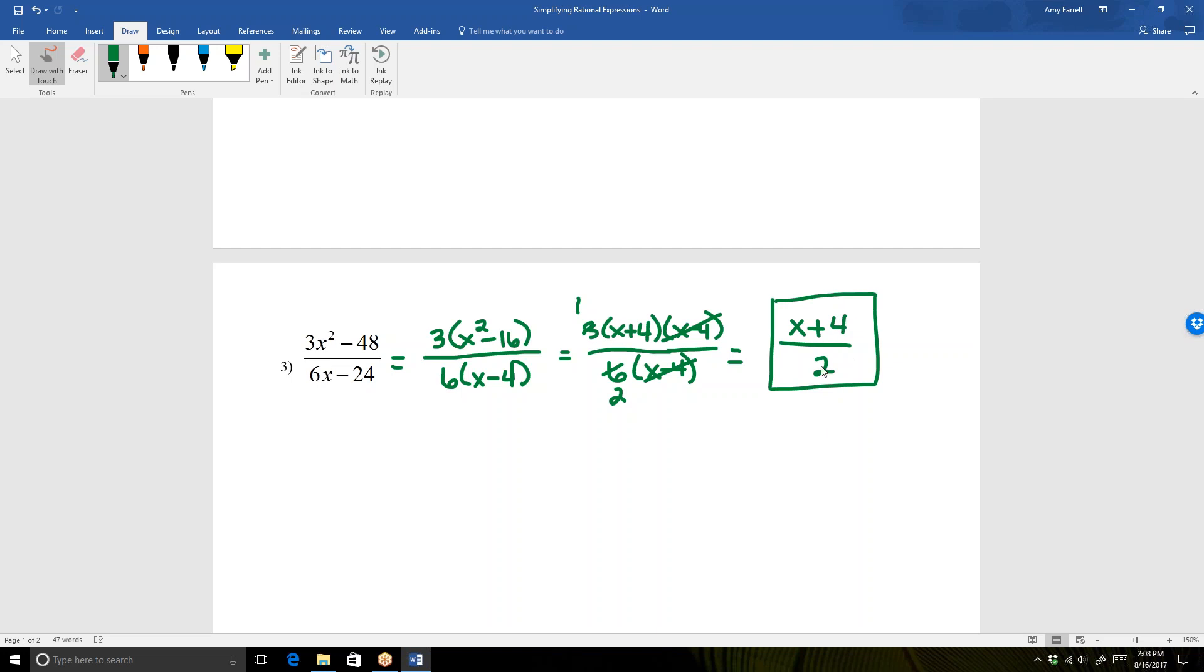Okay, one more time here. Do not cancel the 4 and the 2. Cannot be done. We can only cancel factors, not terms. All right, well that is it for this video. There are quite a few other rational expression videos, so if you still need some help with rational expressions, keep watching.